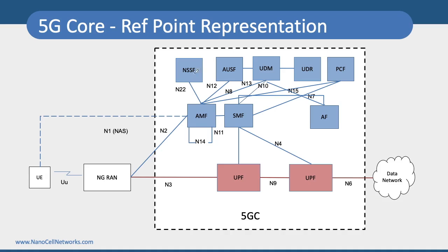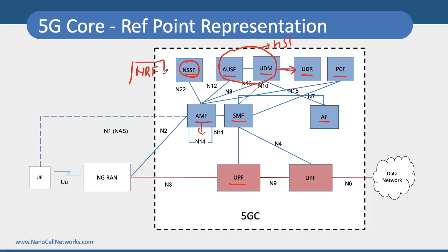When we look at the 5G core network, we talk about various network functions. We have AMF, which is similar to MME; SMF, Session Management Function; Application Function; UPF, User Plane Function; UDM, User Data Management; and AUSF, Authentication Server Function. Together, AUSF and UDM perform functions similar to the HSS. The data repository is stored in something called UDR — Unified Data Repository. PCRF is now called PCF, Policy Control Function, and we have a new function called NSSF, Network Slice Selection Function.